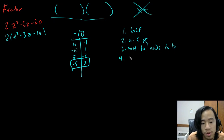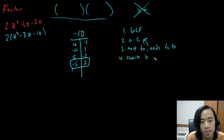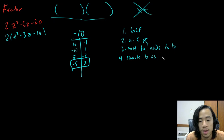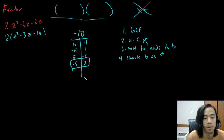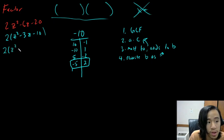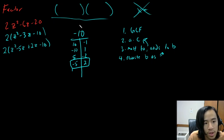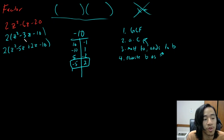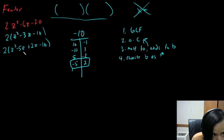Now the next step: you're going to rewrite the B term as these numbers, whatever you get from step three. So check it out. This is going to be two parentheses Z squared, and then instead of negative three Z, we're going to write negative five Z plus two Z minus 10. We did steps two and three to pick which numbers we're going to rewrite B as.